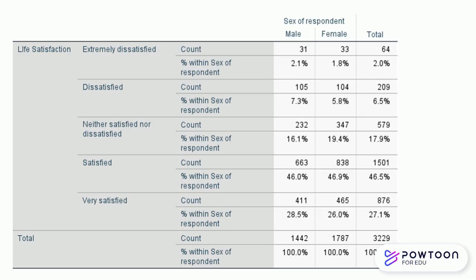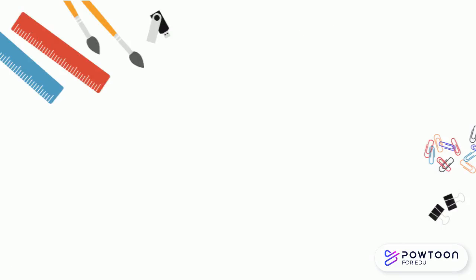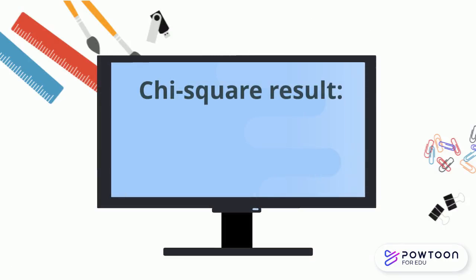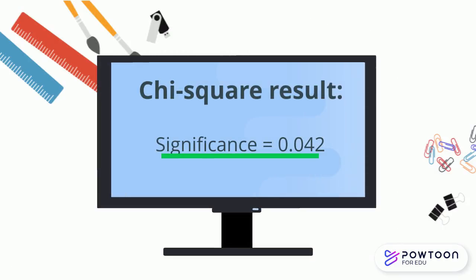For instance, here we can see a difference in the percentage of men falling into the very satisfied category compared to women. We then run the chi-square test which provides us with a p-value, and if this value is below 0.05, like this one here, then it tells us there is a significant relationship between the two variables.